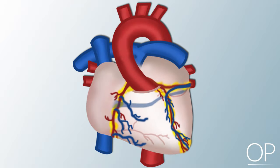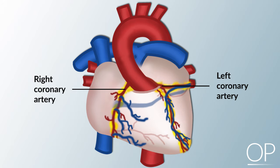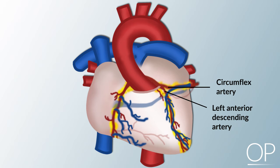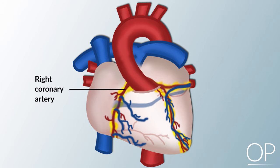The branch of the circulation that supplies oxygen and other nutrients to the cells of the heart is called the coronary circulation. The major coronary arteries are the right coronary artery and the left coronary artery. The left coronary artery originates from a single opening behind the left cusp of the aortic valve and divides into the left anterior descending artery and the circumflex artery. The right coronary artery originates from an opening behind the right cusp of the aortic valve and divides into three major branches.